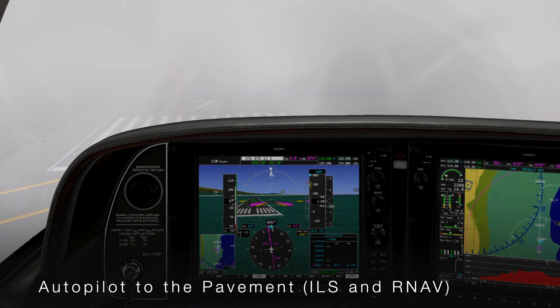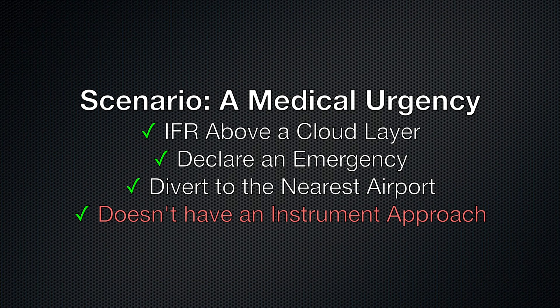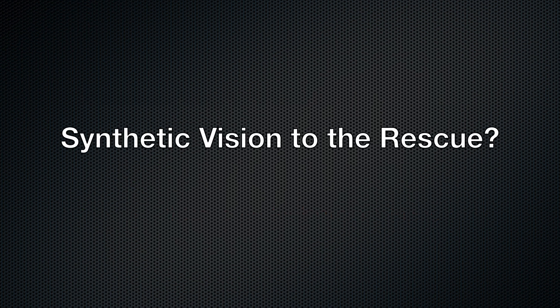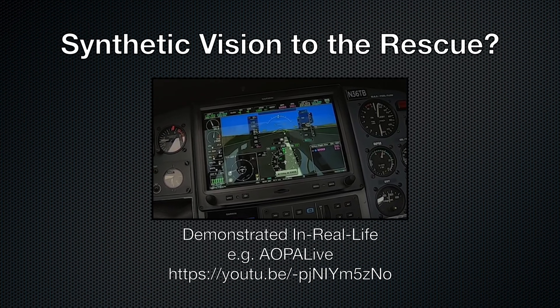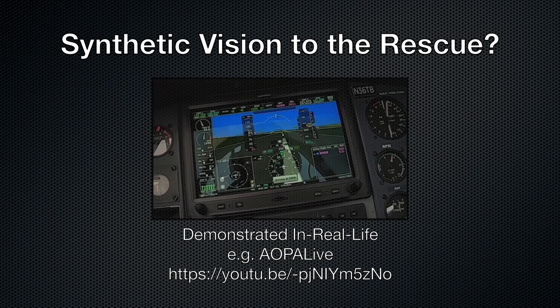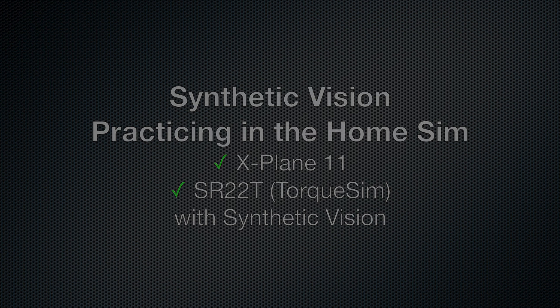In part one of this short series, we used the home sim to fly instrument approaches into an airport with zero visibility and zero ceilings. But what if we have to land and the nearest airport has no instrument approaches? For this challenging emergency, synthetic vision in the panel or even on a tablet might well be our salvation. AOPA even has a nice video on how this can work.